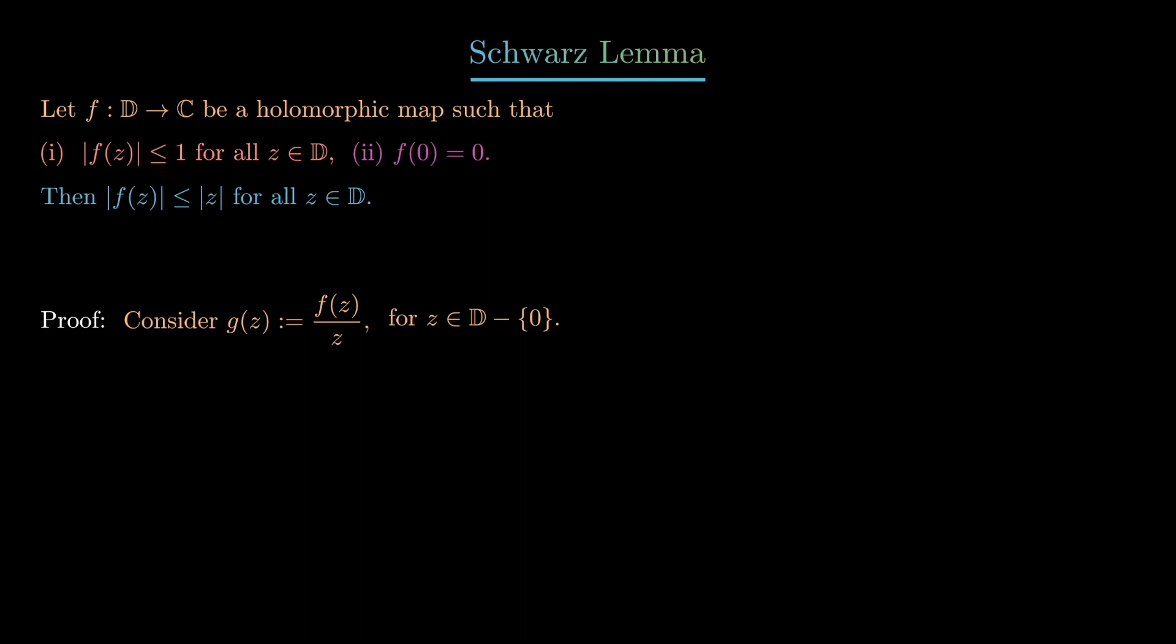If we set g(0) equal to f prime of 0, then this gives us a holomorphic extension of g to the entire disk, noticing that f(z) over z will converge to the derivative of f at 0. This will in fact define a holomorphic map from the disk into the complex plane.